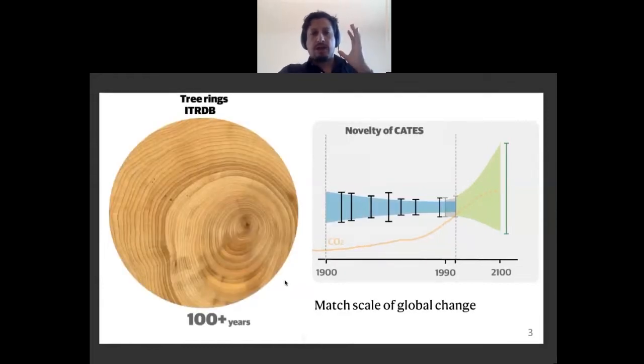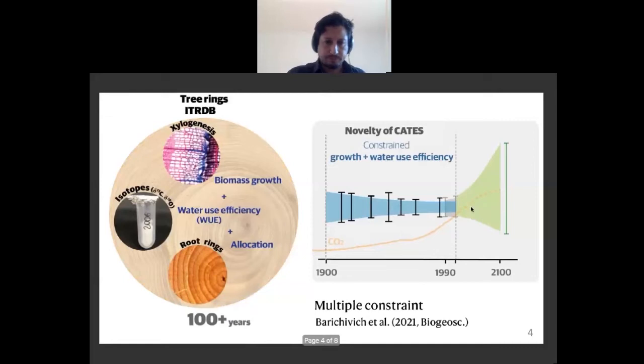I propose an innovative way to use thousands of tree ring records to constrain model responses at centennial timescale, matching the timescale of global changes such as the long-term increase in CO2.